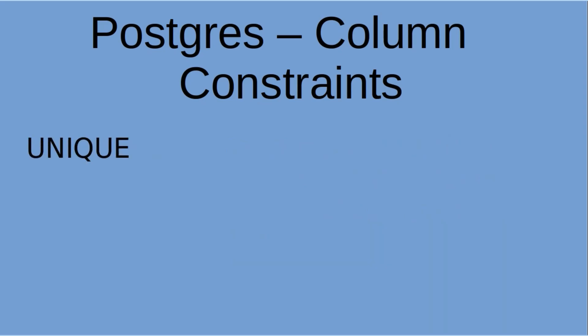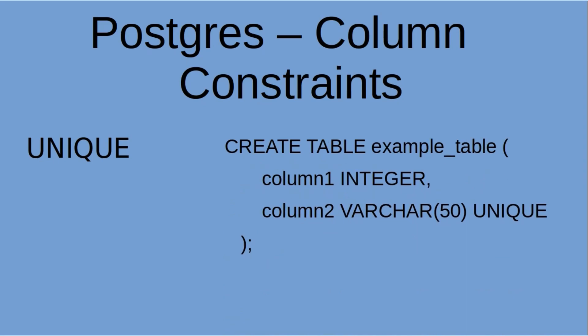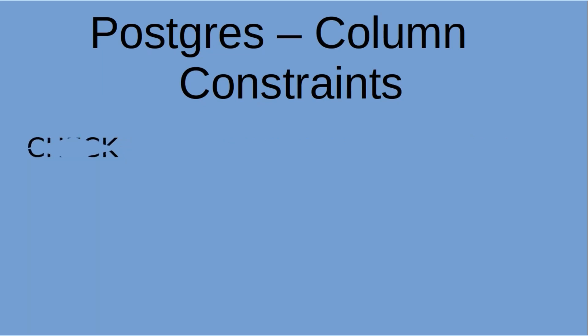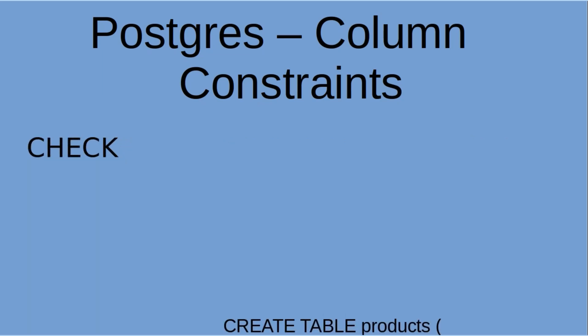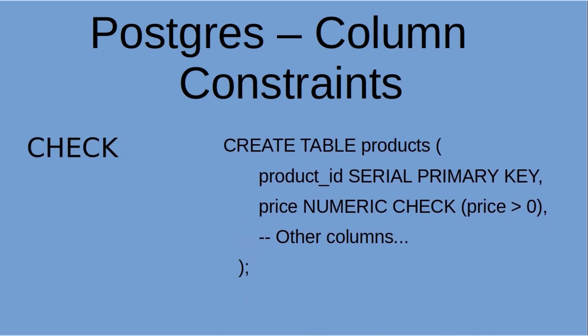Moving on to the UNIQUE column constraint — it specifies that the values in the column must be unique across all rows in the table. As you can see here, we have our table name, the column, its type, and it is marked as UNIQUE. Last but not least is the CHECK constraint at the column level — this is what it looks like when you define it at column level: CHECK that the column 'price' is greater than zero.